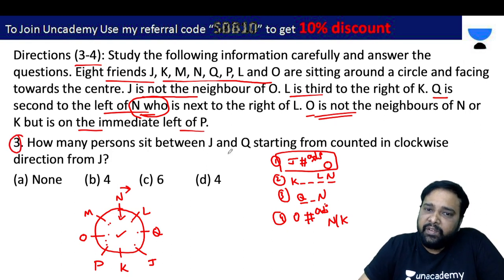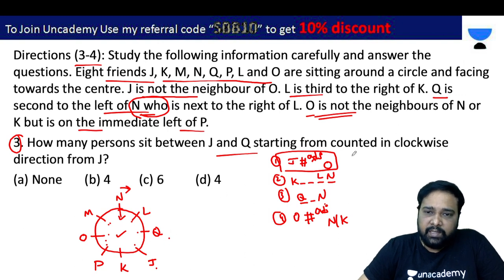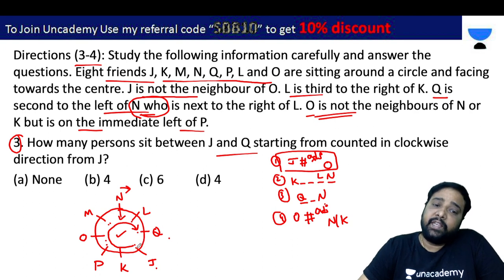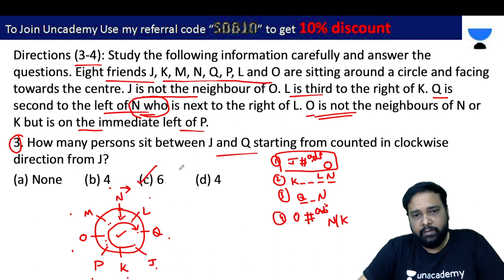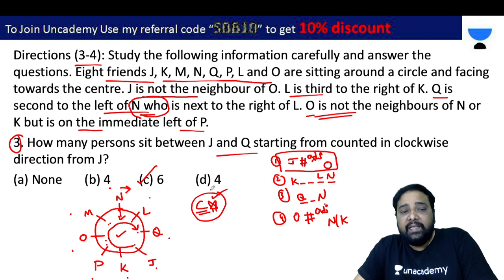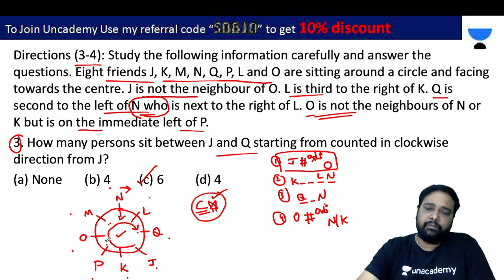How many persons sit between J and Q, counted in the clockwise direction from J? Counting clockwise from J: 1, 2, 3, 4, 5, 6. The answer is C.